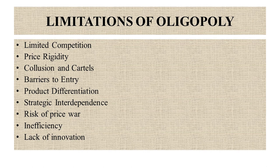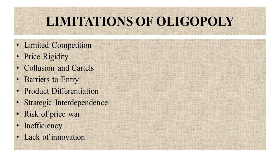The next limitation is collusion and cartels. Oligopolistic firms may collude to restrict competition and maximize profit. This can lead to the formation of cartels where firms cooperate to fix prices, allocate market share, or engage in other anti-competitive practices which may harm consumer welfare. The next challenge is barriers to entry: oligopolistic markets often have high barriers such as economies of scale, capital requirements, and government regulation, which can limit new firm entry and reduce competition and innovation.